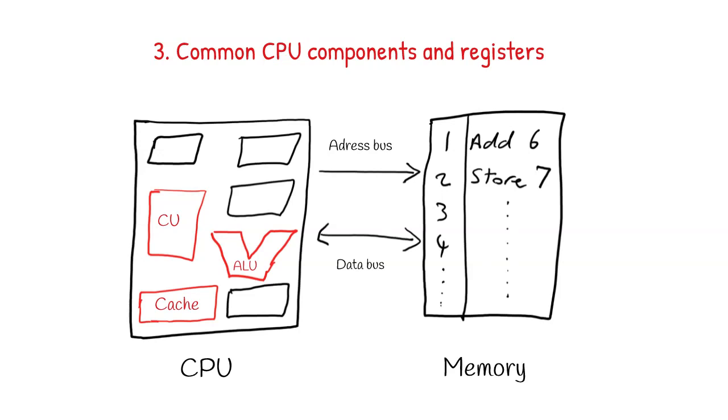Registers are memory built directly into the CPU. The program counter contains the address of the next instruction to be fetched from memory. The memory address register is used to put addresses onto the address bus when the CPU needs to read or write from memory. The memory data register holds data that is either being written to memory or has just been read from memory. The accumulator is used to store the results of calculations and logical operations performed by the ALU.